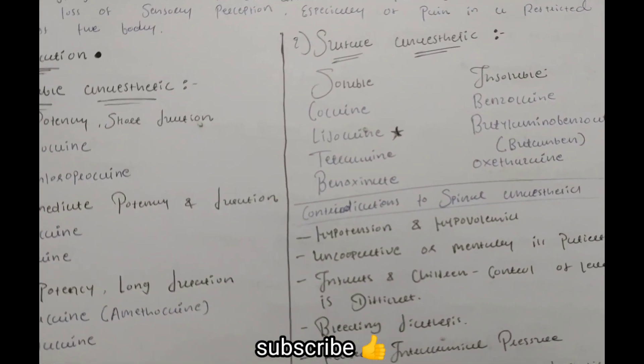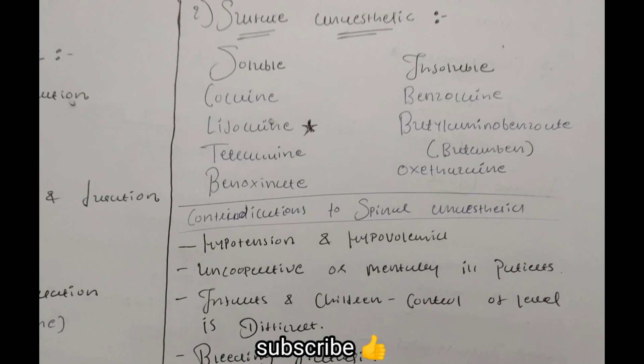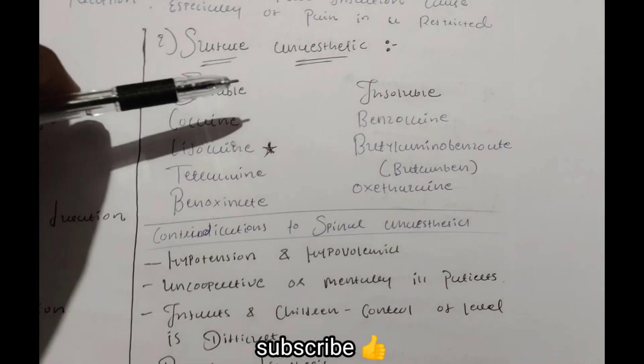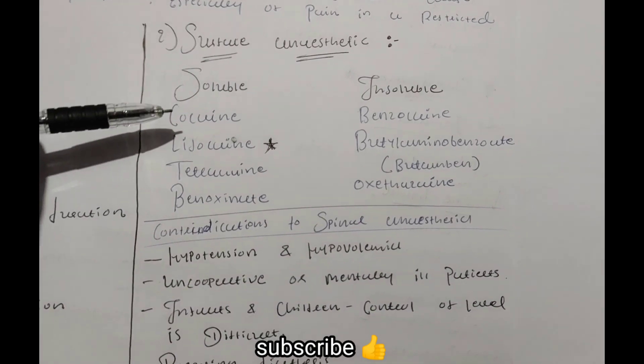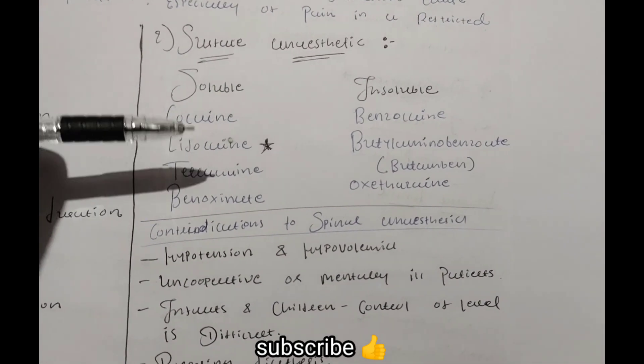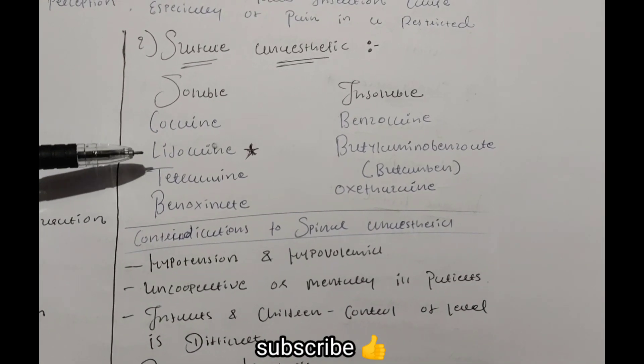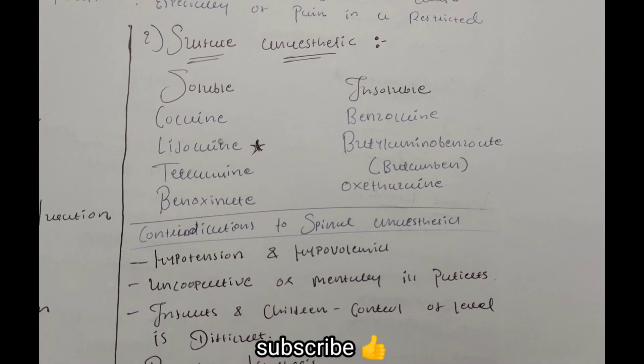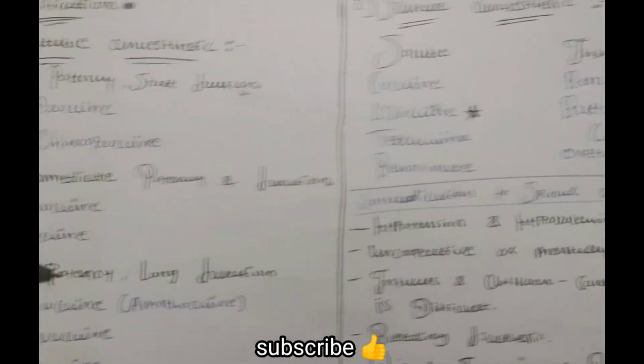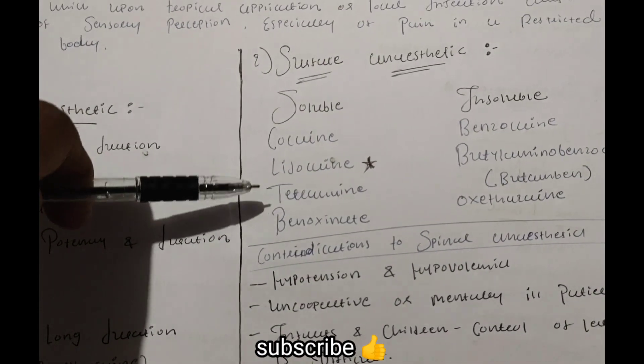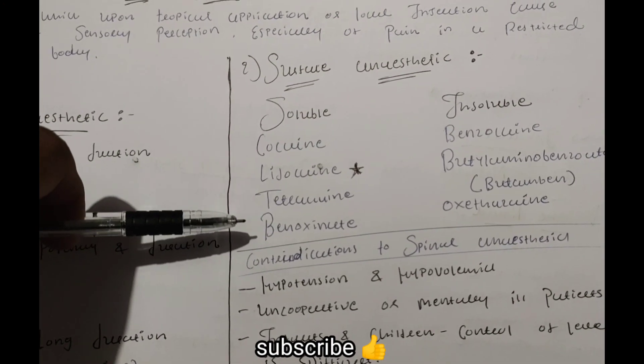This is called surface anesthesia which has two types: soluble and insoluble. Soluble types include lignocaine, also known as lidocaine. Then this is tetracaine which we have seen in high potency long duration, so this is the same thing.